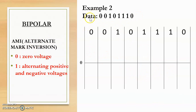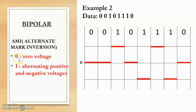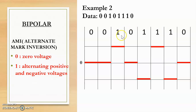Let us consider another example. The data given is 0 0 1 0 1 1 1 0 and we need to convert it into a digital signal using AMI. Bit 0 is 0 voltage and bit 1 is alternating positive and negative voltages. The first two bits are 0, so both are represented as 0 voltage on the reference line. The next bit is 1 — the first 1 in the sequence — so we assume positive logic and represent it as positive voltage. The next bit is 0, so 0 voltage.